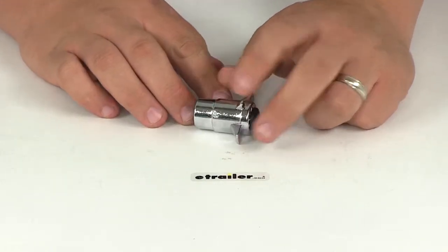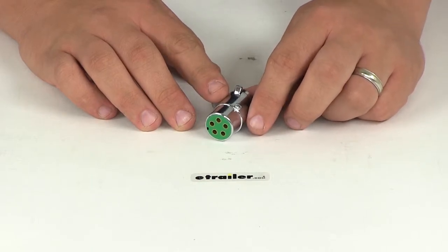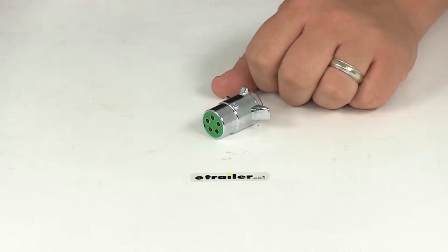Today we're going to be reviewing part number PK-11501. This is the Pollack five-pole round pin trailer wiring connector. The standard five-pole plug is going to connect the trailer to the socket on the tow vehicle.